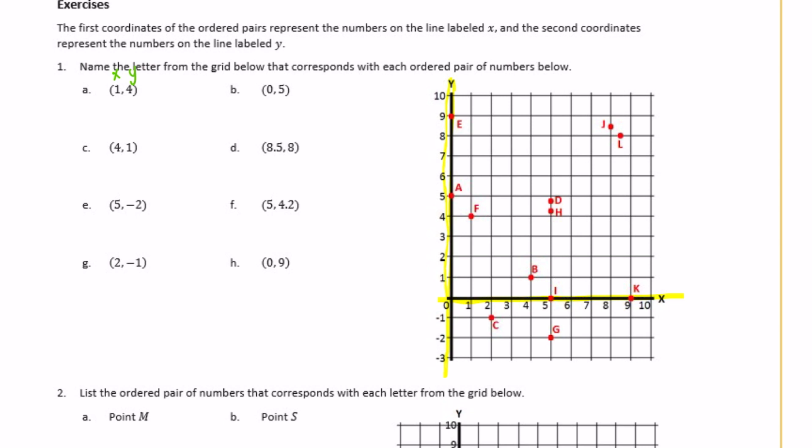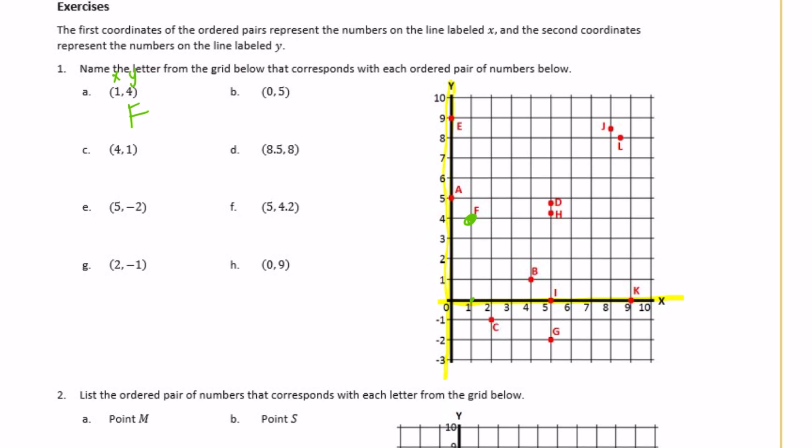So 1, 4. So 1 is the x axis. We're going to find 1 on the x axis, go over to 1, and then 4 go up to 4. So this is 1, 4. So f is located at 1, 4. We can write out point f. 0, 5. So 0, 5 would mean that we don't go anywhere on the x axis. We stay at 0, and then up to 5, which is a.